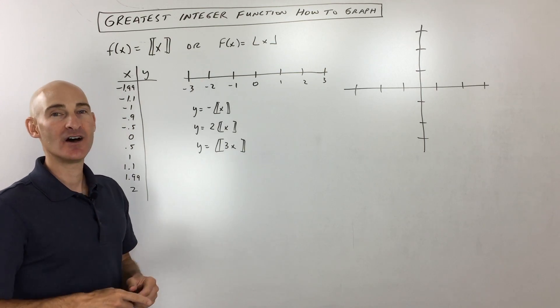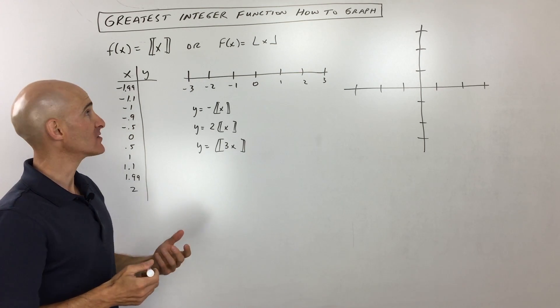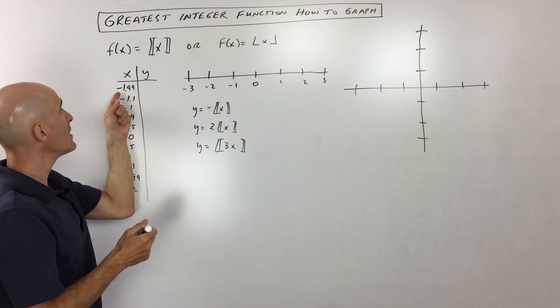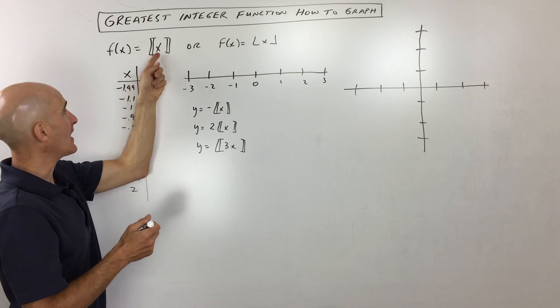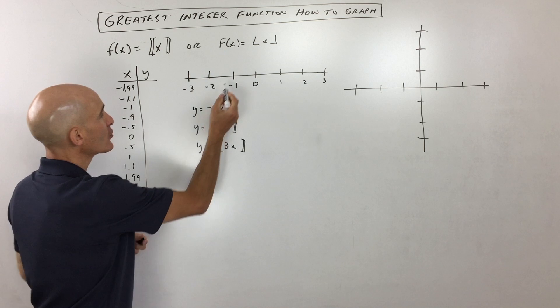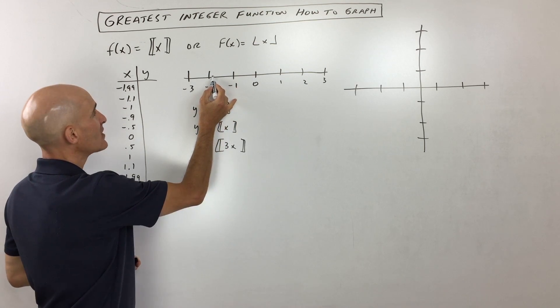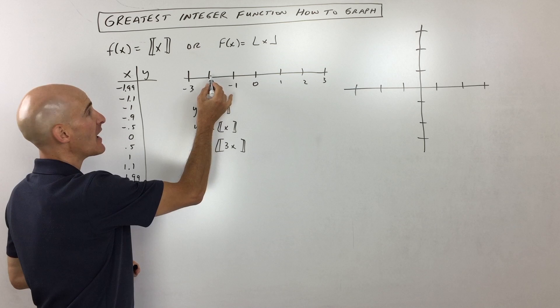So you round down to the next integer. So I'll show you an example. See if you have negative 1.99, so what you do is you go out on your number line, negative 1.99 is right here. You round down, which is on the number line, you round to the left.